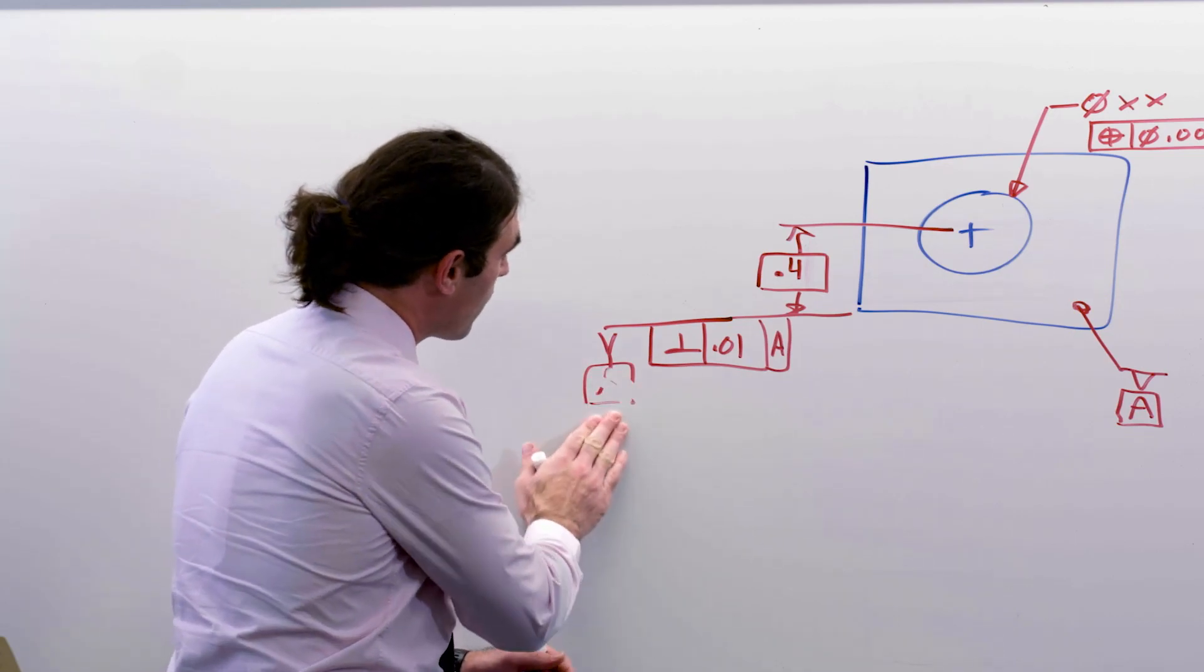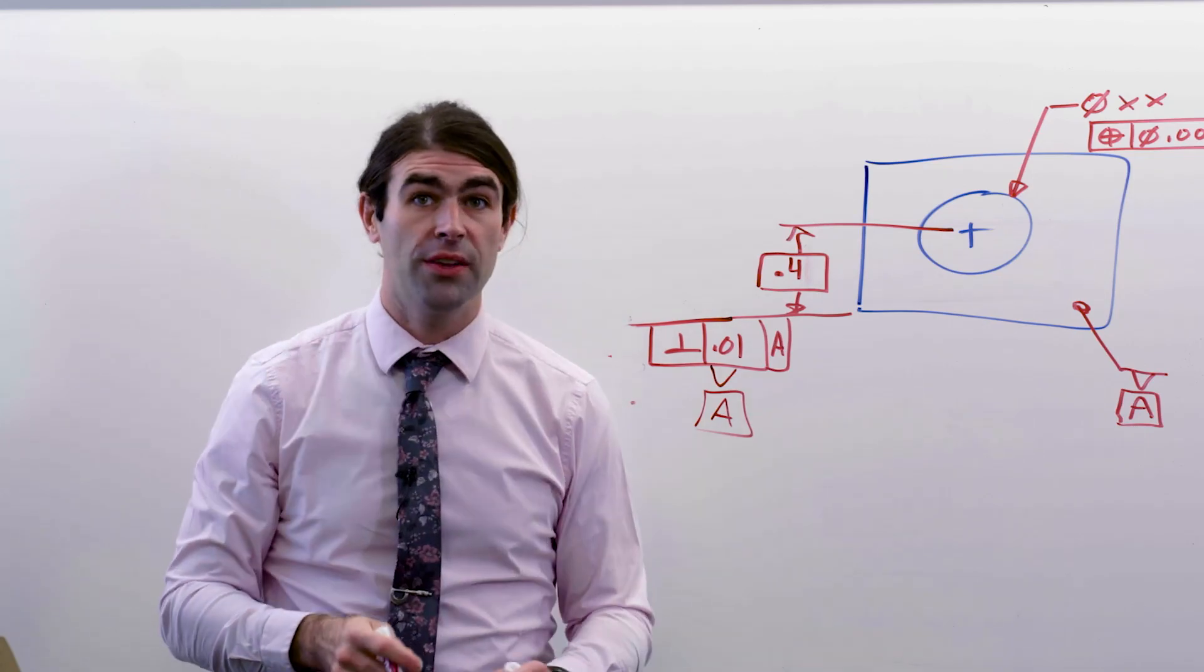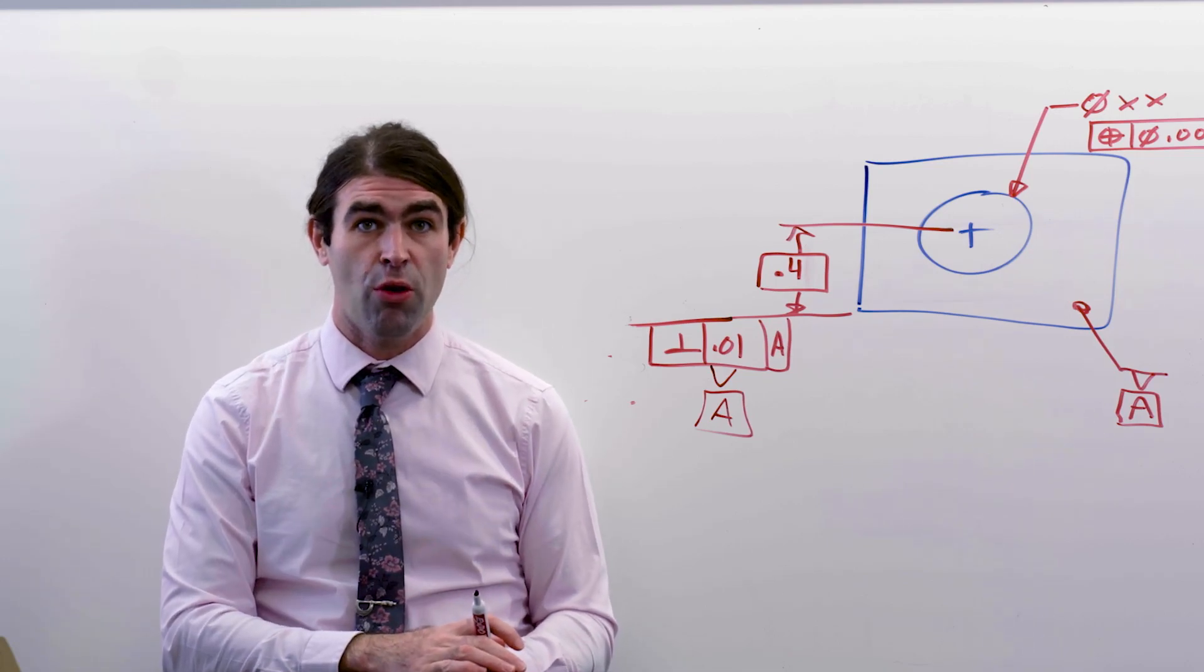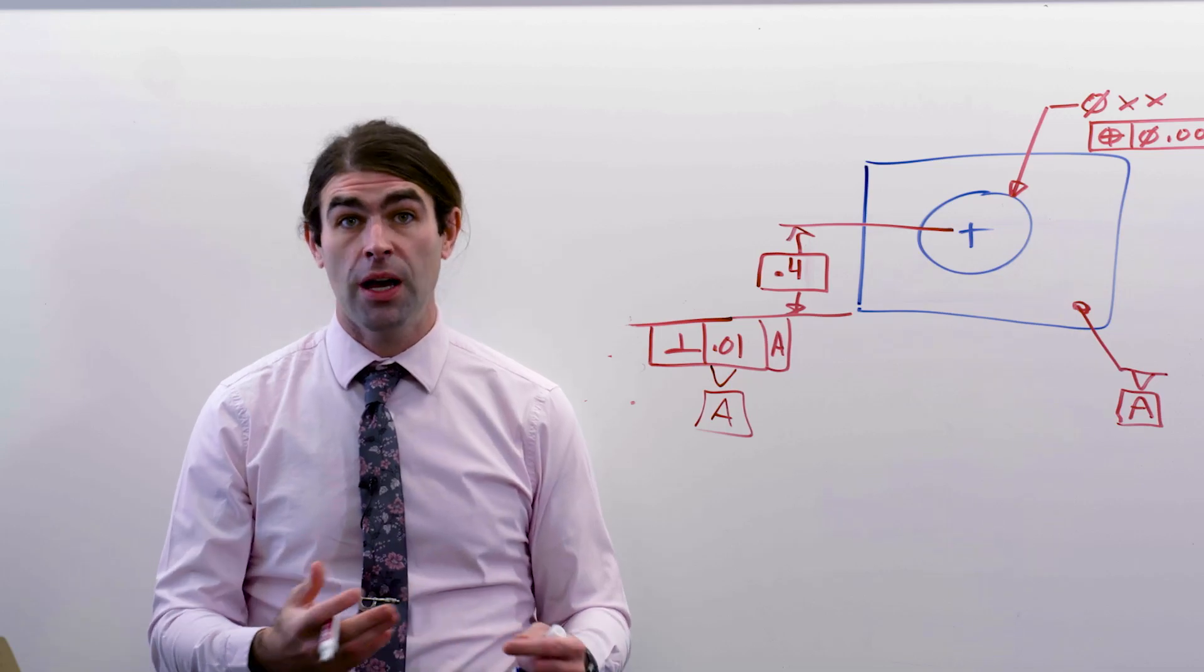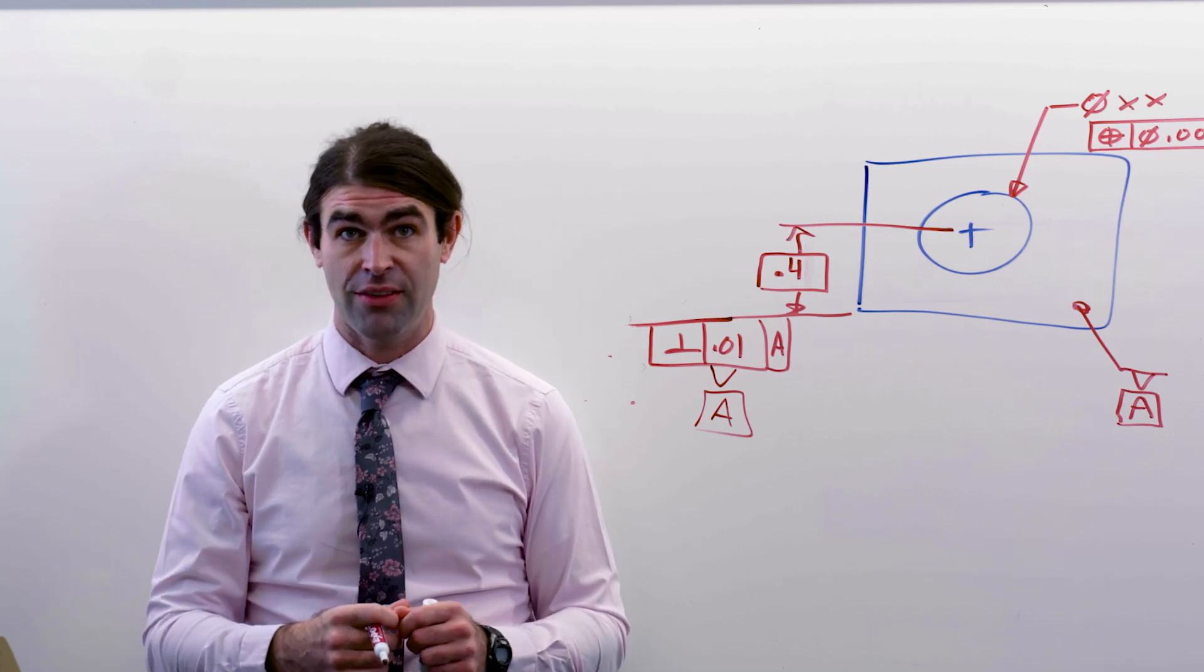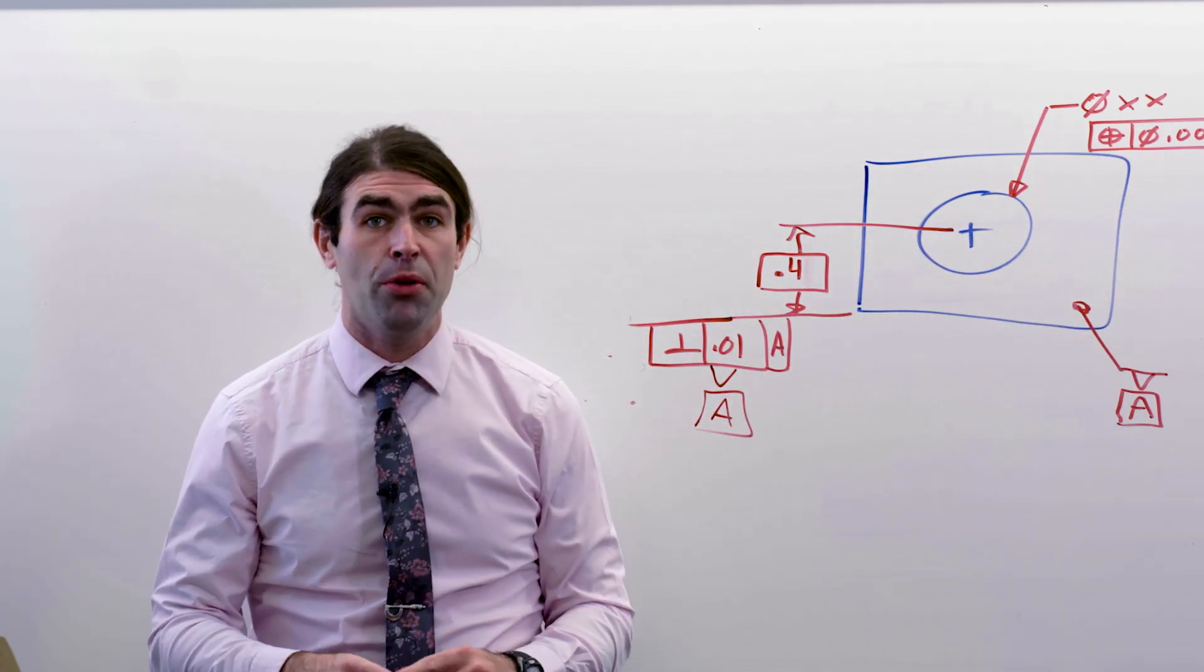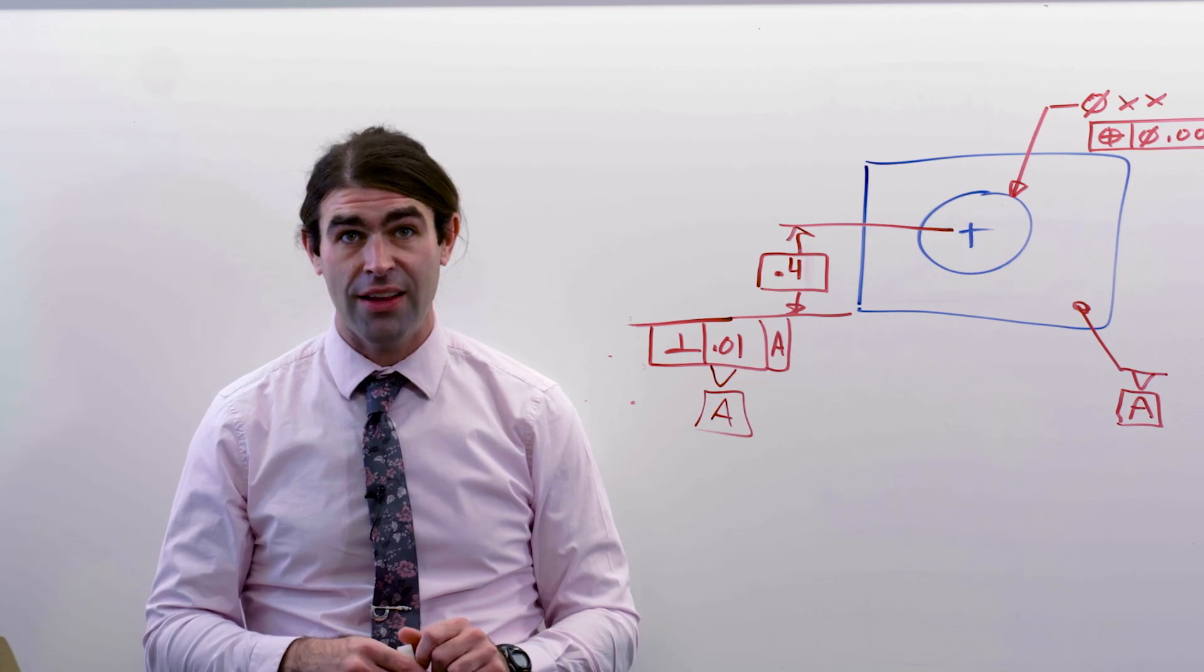So, the 2009 version of the standard, you can do this no problem. And many people out there put datum feature symbols on a feature control frame as a matter of course. It's one of those things you'll pick up if you see older drawings. Typically, it's only applied to something that's a feature of size. For example, the 1994 standard, you could easily apply a datum feature symbol to this feature control frame because it applies to a feature of size.